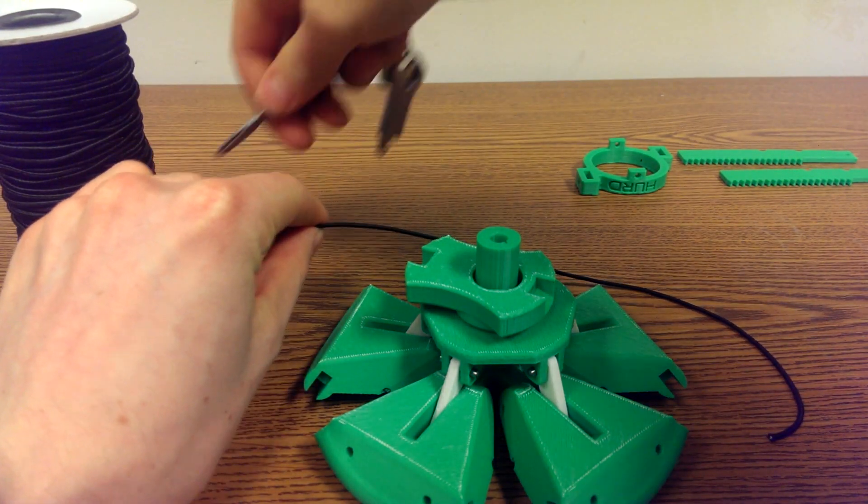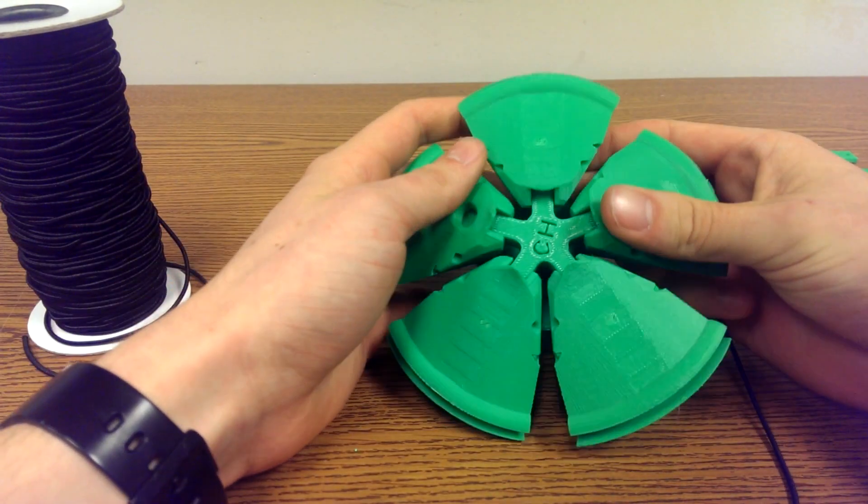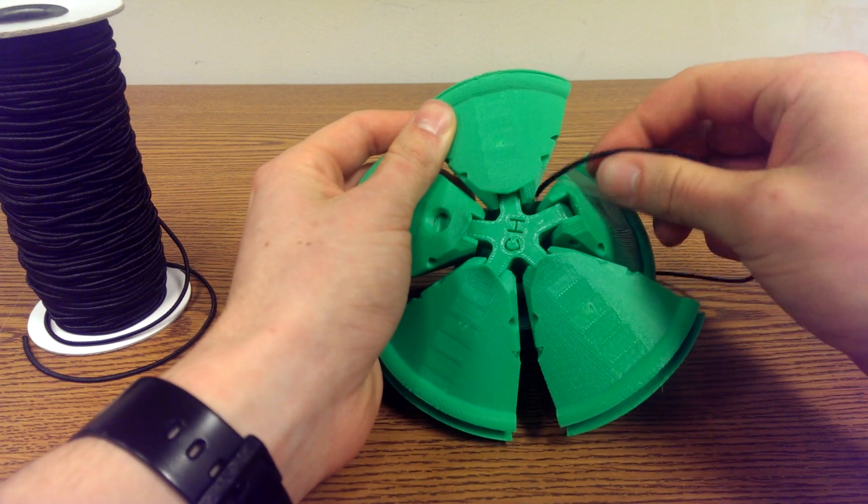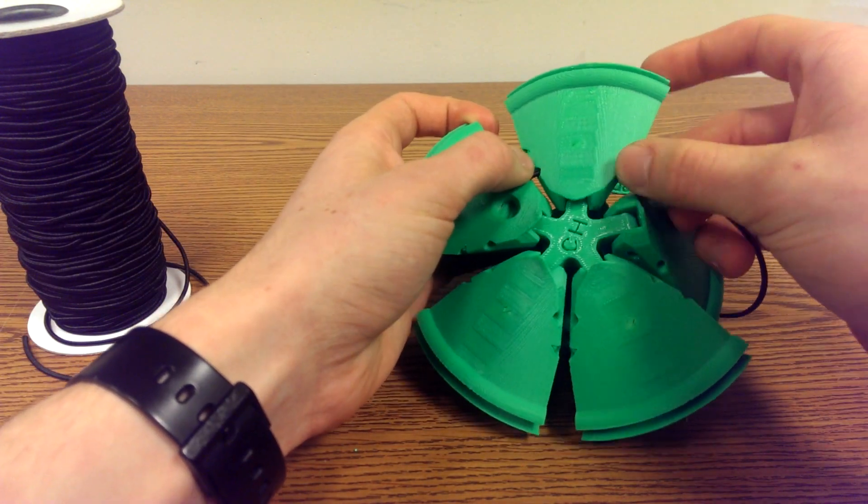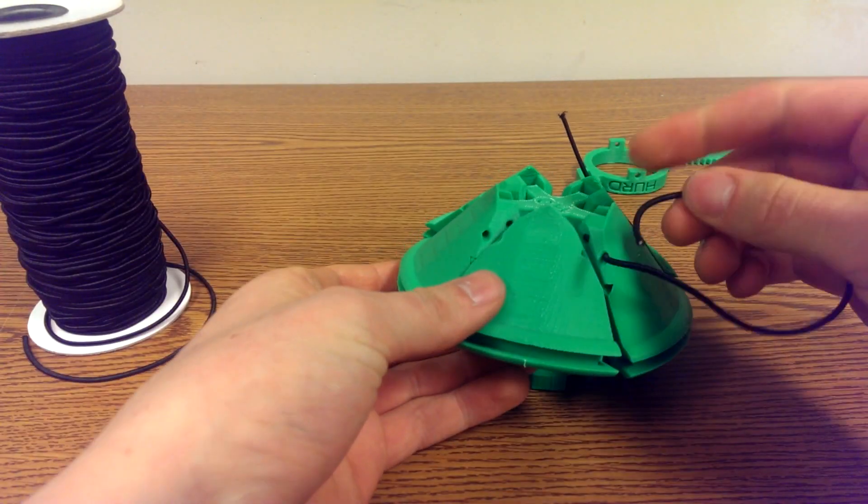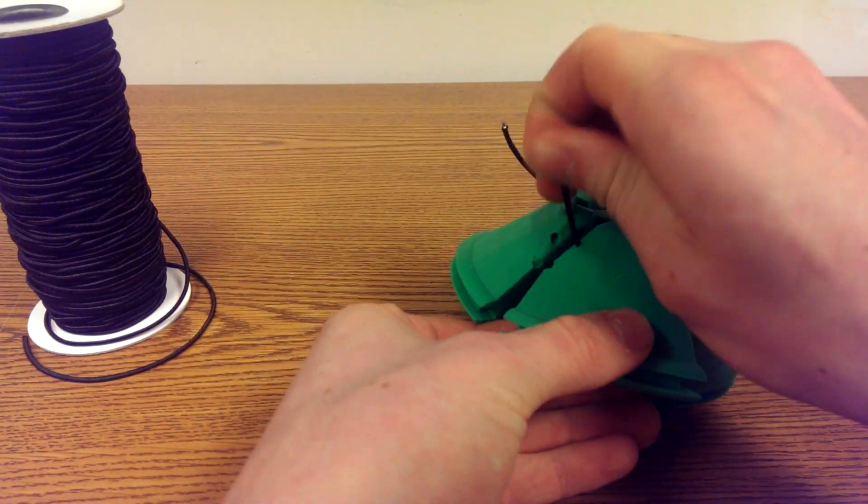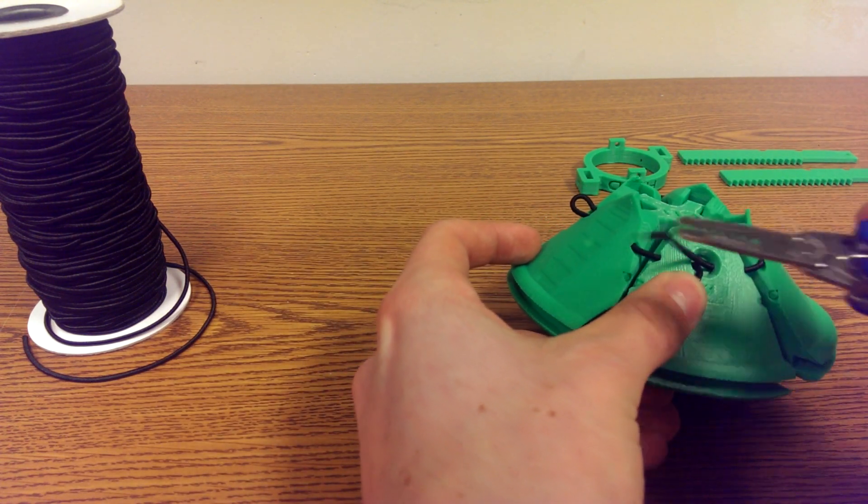So go ahead and take a length of elastic cording or if you need to use a long rubber band that will work as well and feed it through the second hole up on the pedals. One of the pedals has a hole in the top of it and you'll see there that's actually for the knot in the elastic. So as you feed the elastic around when you arrive at that pedal just pull the elastic out of that hole.